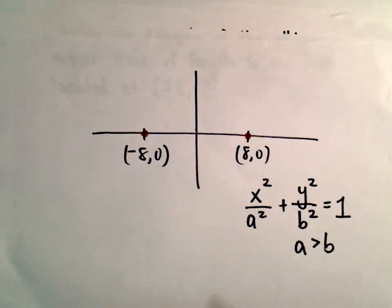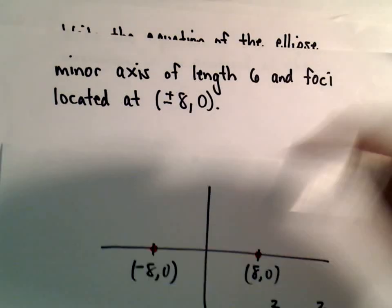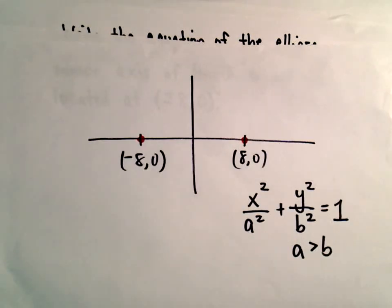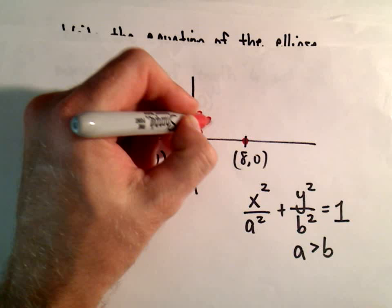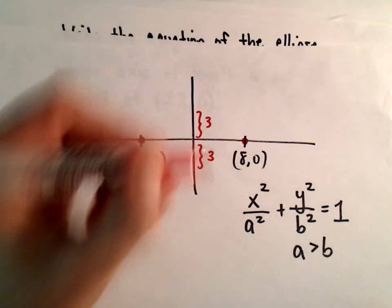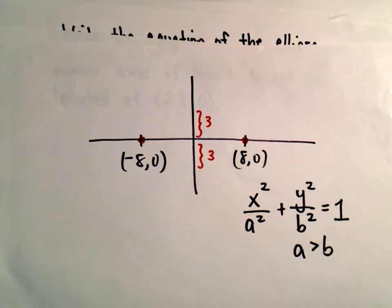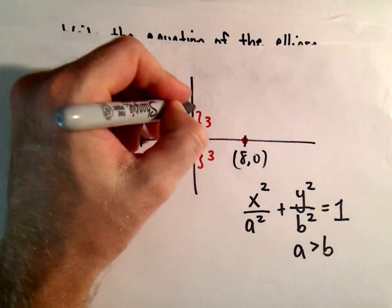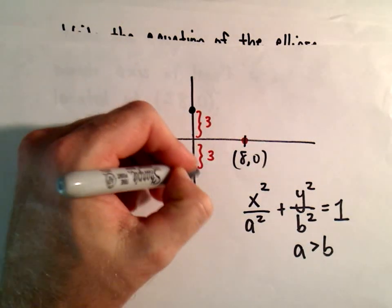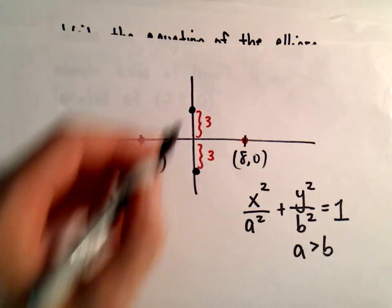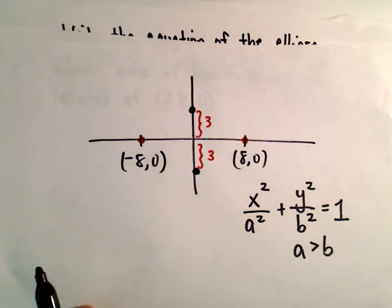Alright, so we're told that it has a minor axis of length 6. So that means if I go up 3 units and down 3 units, I'm going to hit a point on our ellipse. We'll hit those co-vertices.